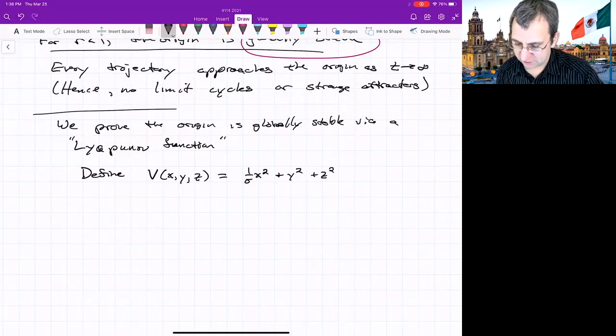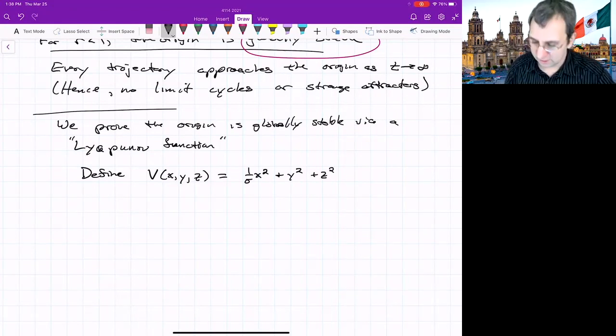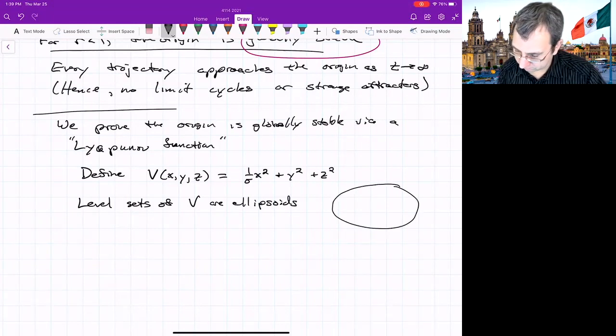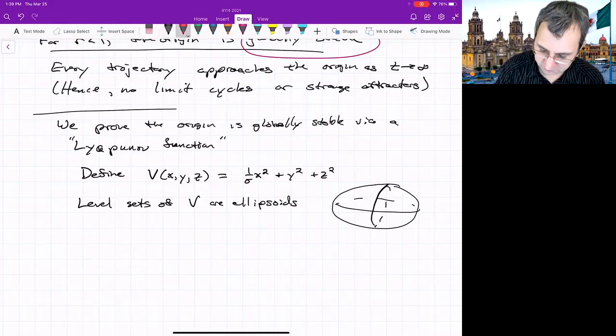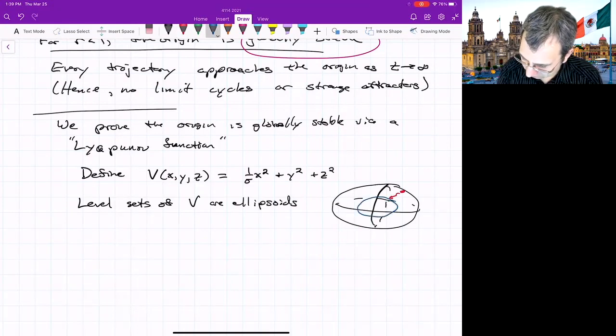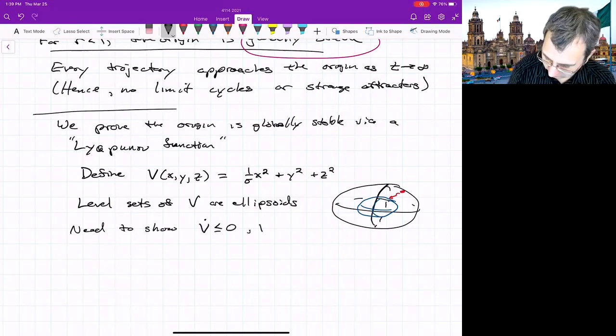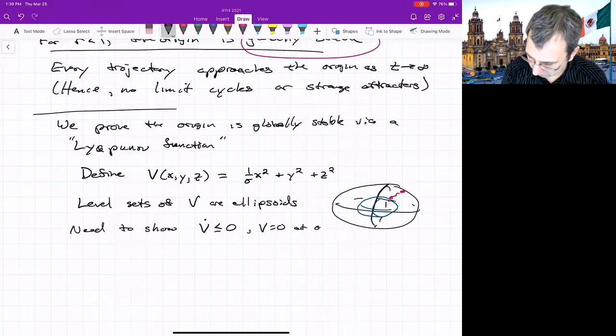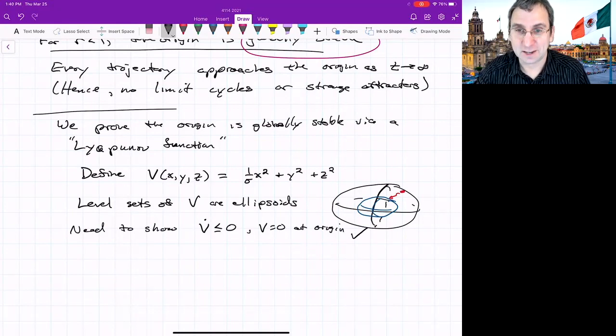It looks a lot like the distance squared, but we put a 1 over sigma in front of that x squared term. Remember what the Lyapunov function is. It's like an energy-like function in a system with friction. You want to construct it so that it keeps decreasing along trajectories. In this case, if we didn't have that sigma out in front, then level sets of v would be spheres. In this case, level sets of v are ellipsoids surrounding the origin. If v is decreasing, then for some point it starts on this. At some later time, the ellipsoid is shrinking down. So what we want to show, we need to show that v dot is less than or equal to 0 and v equals 0 at the origin. You could just plug in x, y, and z equals 0 and see that v equals 0 at the origin. So check.